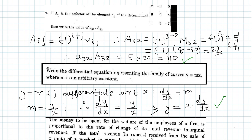Now, the small a₃₂ is the element in the third row and second column. Looking at the third row and second column, the element is 5. So a₃₂ is 5 and the cofactor A₃₂ is 22. When you multiply these two, you get 110. That is the value of the product.